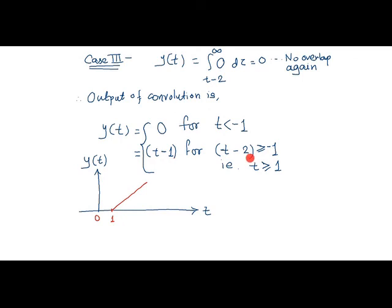Thus, from the nature of the output, we make a conclusion that it is a ramp signal which is shifted by 1 unit. Hence, the output is sketched as shown in the figure here.